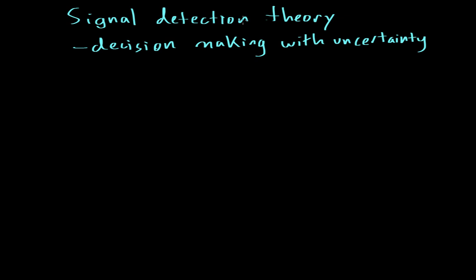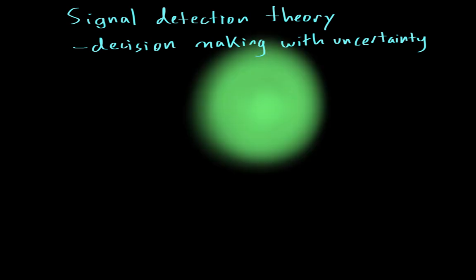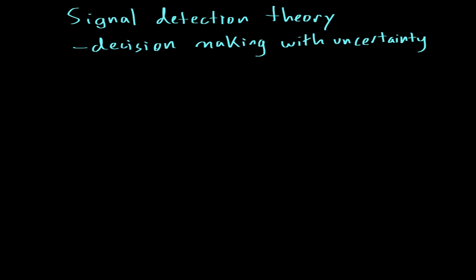Let me give you an example of what signal detection theory is trying to do. I want you to look at the screen and tell me if there's any change. So, it was pretty obvious that I put up this bright green circle. Now keep looking at the screen and try and notice any changes.